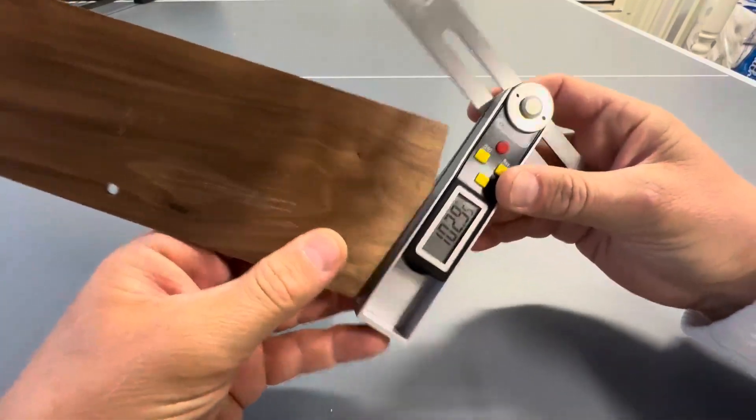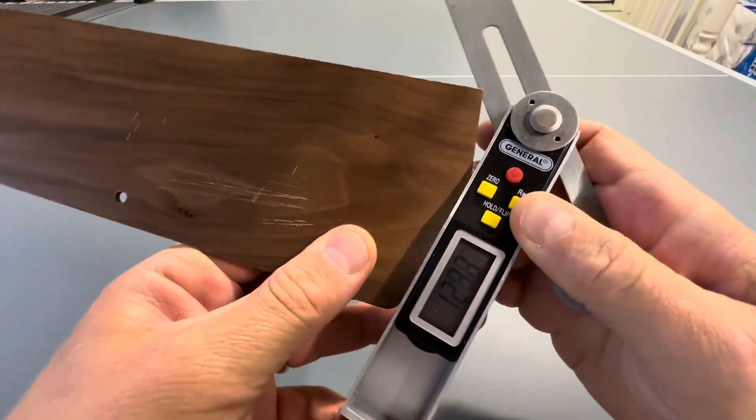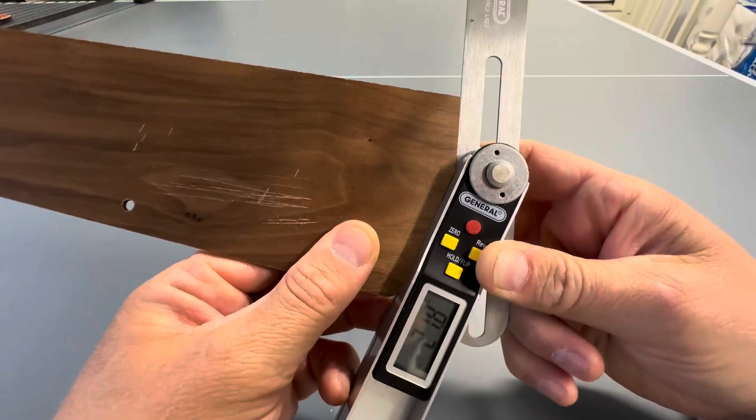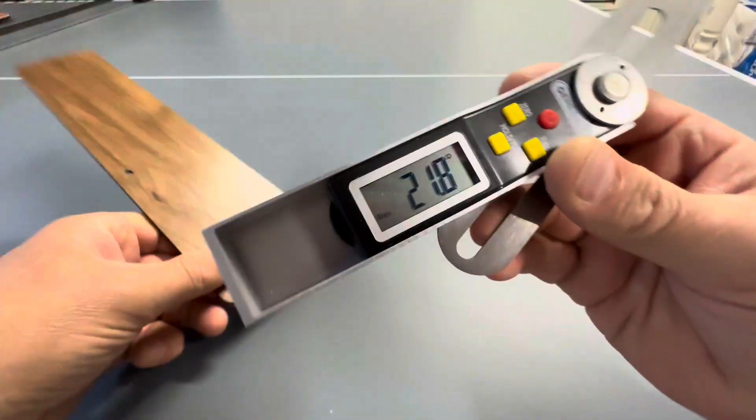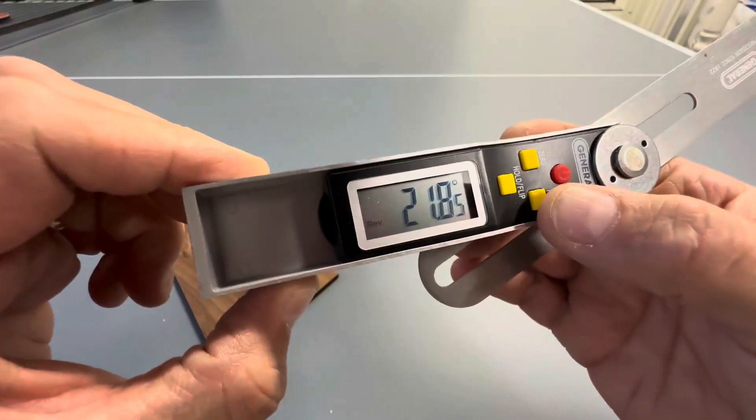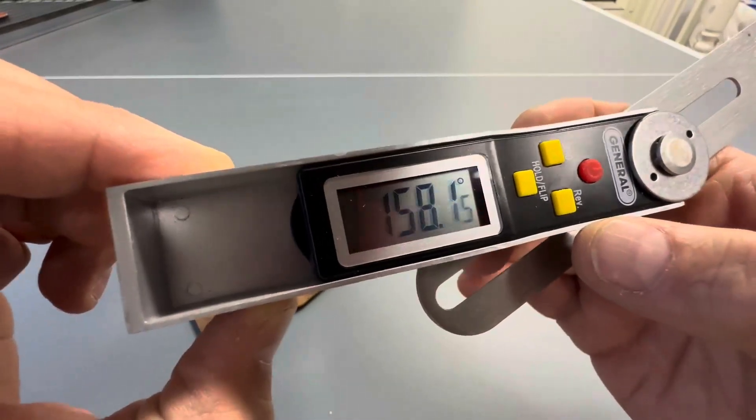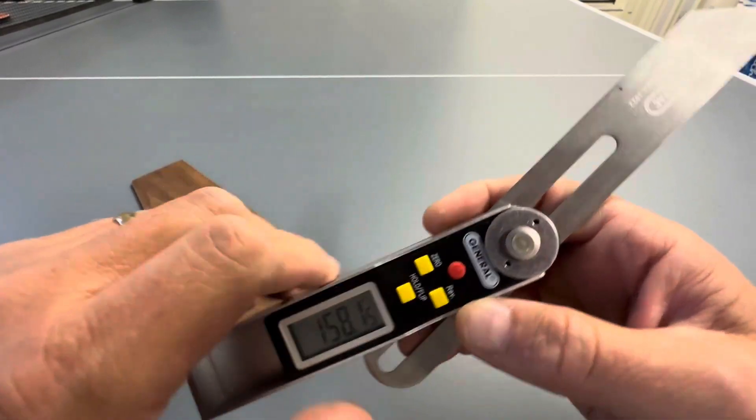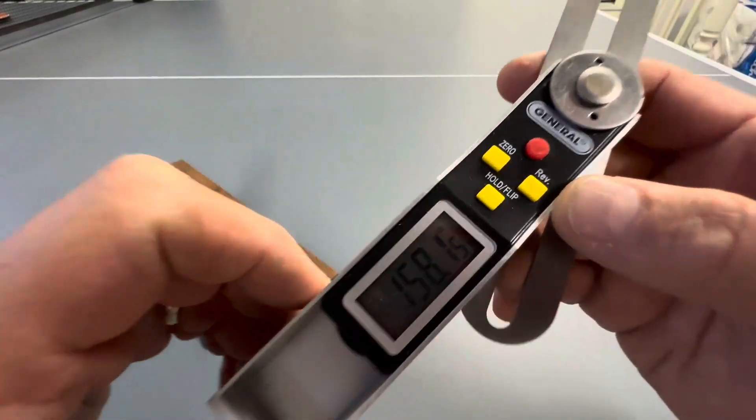As you see, even an angle this extreme, you can conform to and boom, there's your angle. So 218 degrees or you can reverse it and be 158 degrees. And the reversing mechanism gives you different angles depending on how you're measuring stuff like an inside or outside corner.